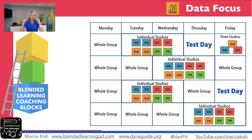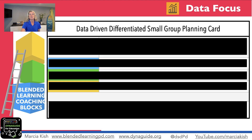The consistency part was talking about two days where we're doing a two-day checklist and students are working at their own pace, place, and path. Now what we want to do is really use the data to drive our small groups.